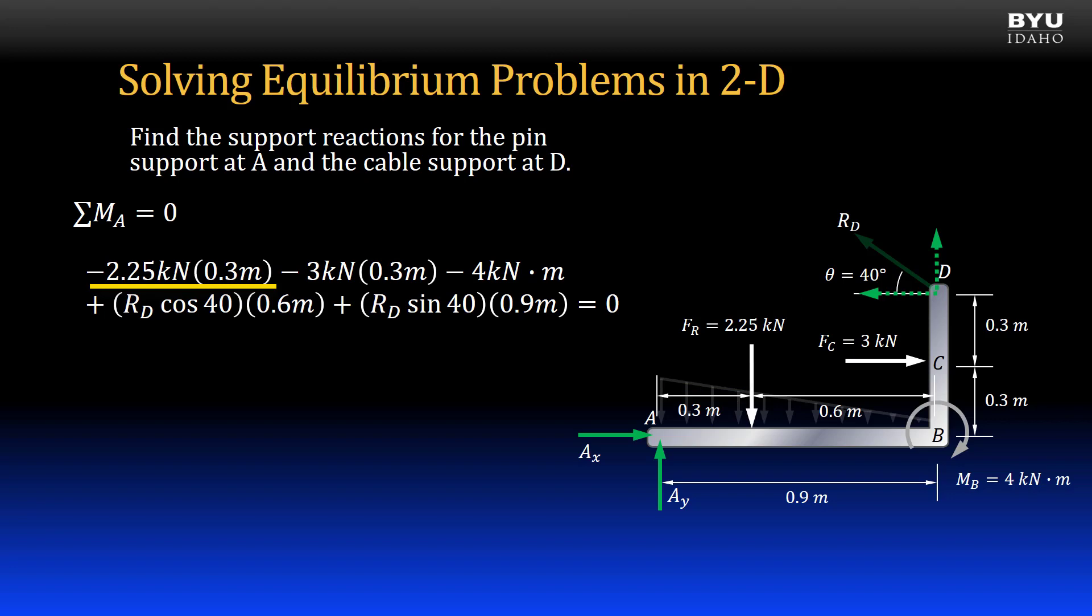We also include the 3 kN concentrated force times its offset from A, also 0.3 meters. It is negative by the right-hand rule. Next, I include the concentrated moment at point B.